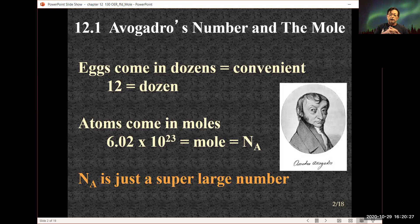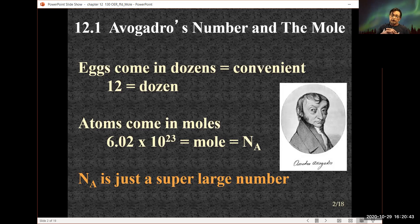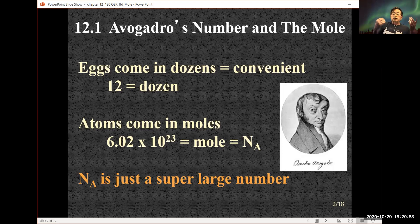That number is 6.02 times 10 to the 23rd. It's a pretty big number. It has the symbol capital N with a subscript A for Avogadro's number. Just like we say a dozen — a dozen donuts, a dozen cell phones, a dozen students — we know we're talking about 12.